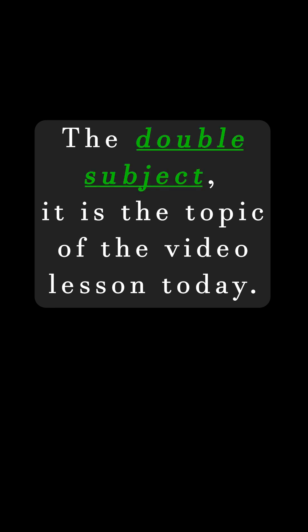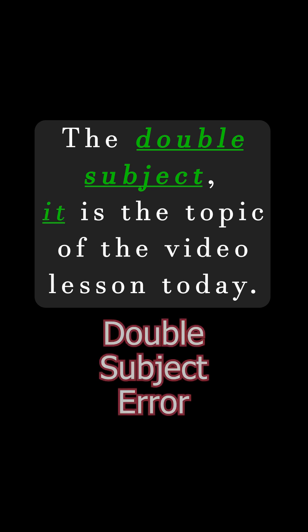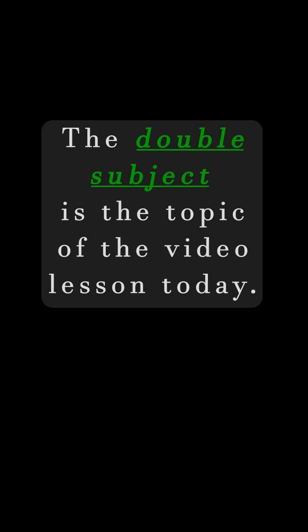Double subject is the subject, but it — in 'it is the topic of the video lesson today' — is also a subject. To fix the double subject error, simply take out the personal pronoun 'it' following the first or initial subject, and you have fixed the sentence. You simply have to write: the double subject is the topic of the video lesson today.